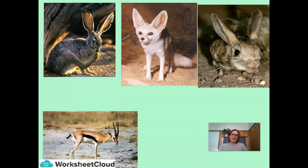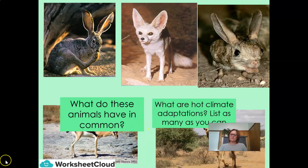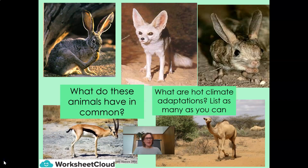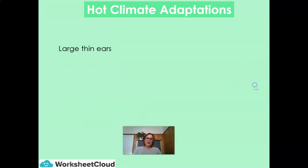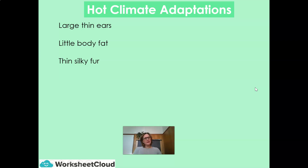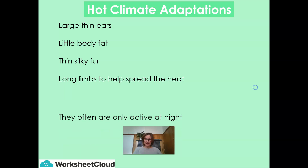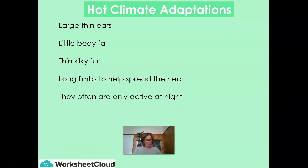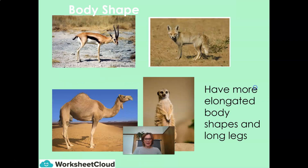Let's take a look at the animals from a hot desert climate. What do you think they have in common? Look for the hot climate adaptations and list as many as you can. Take note of the body shape, the size of the ears, and the length of the limbs. Hot climate adaptations include: large, thin ears; little body fat; thin, silky fur; long limbs to help spread the heat; they are often only active at night because it's cooler; and they have a more elongated body shape.